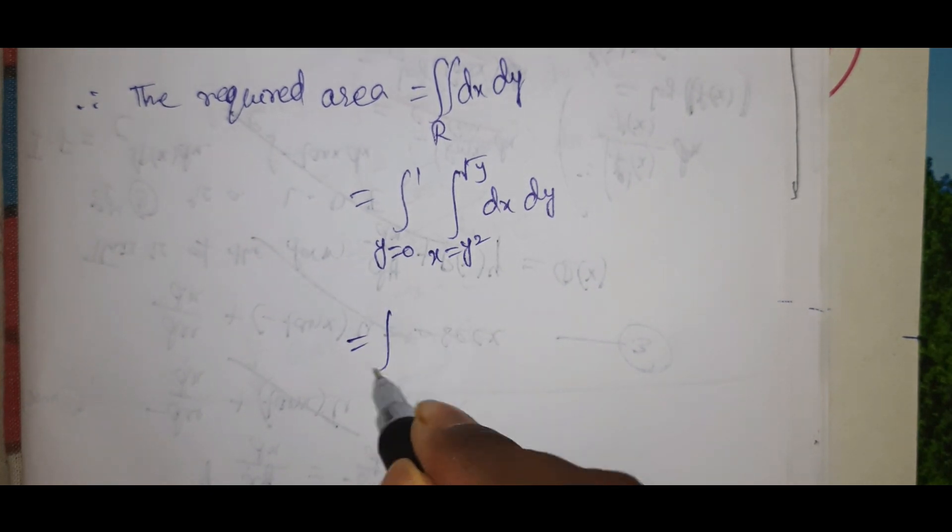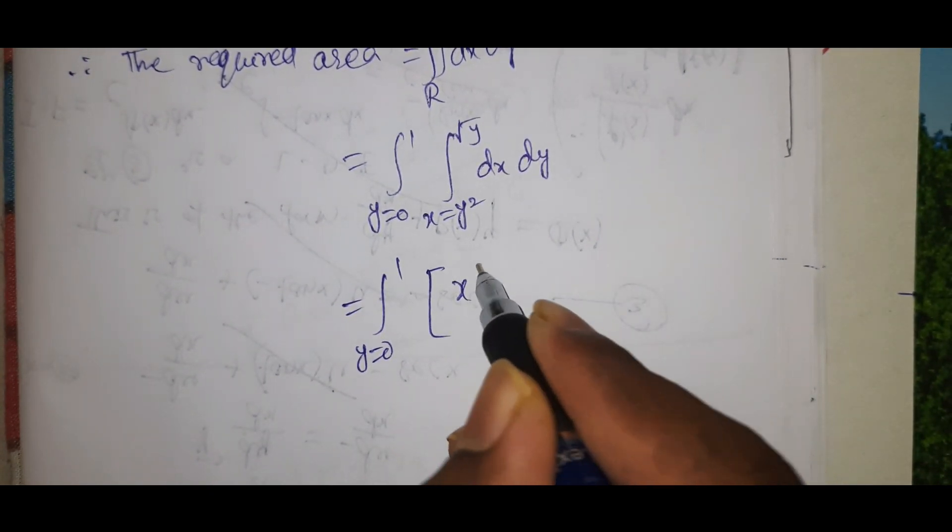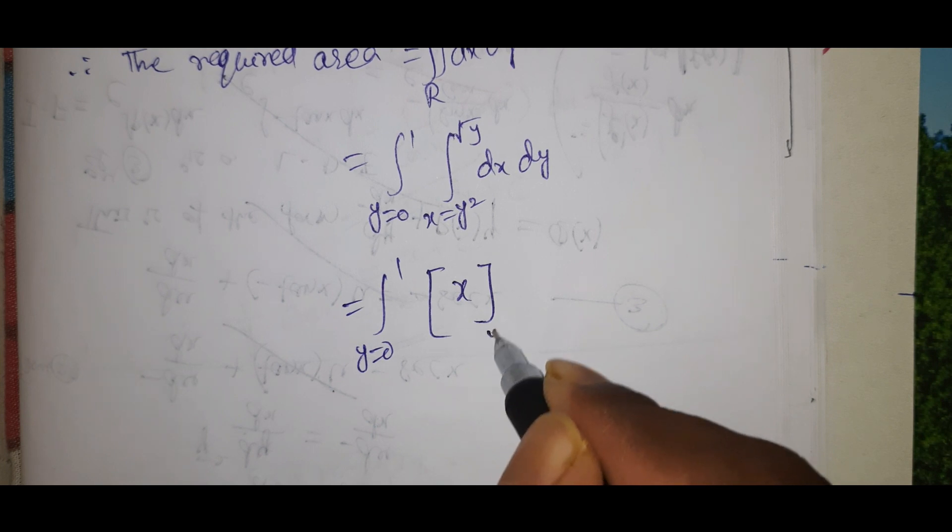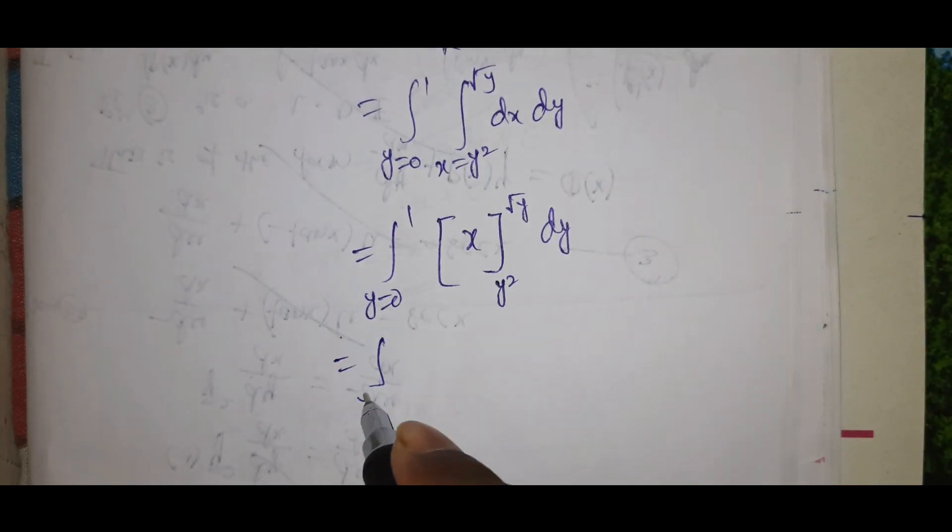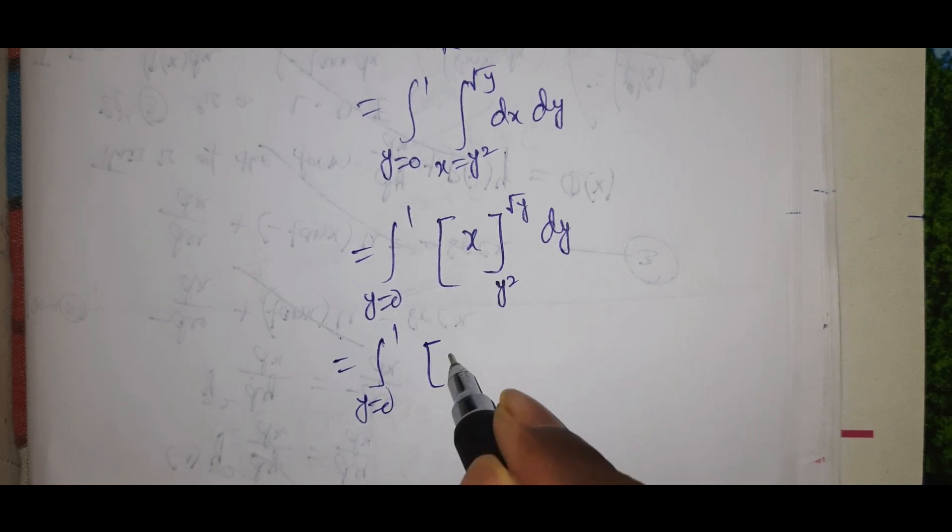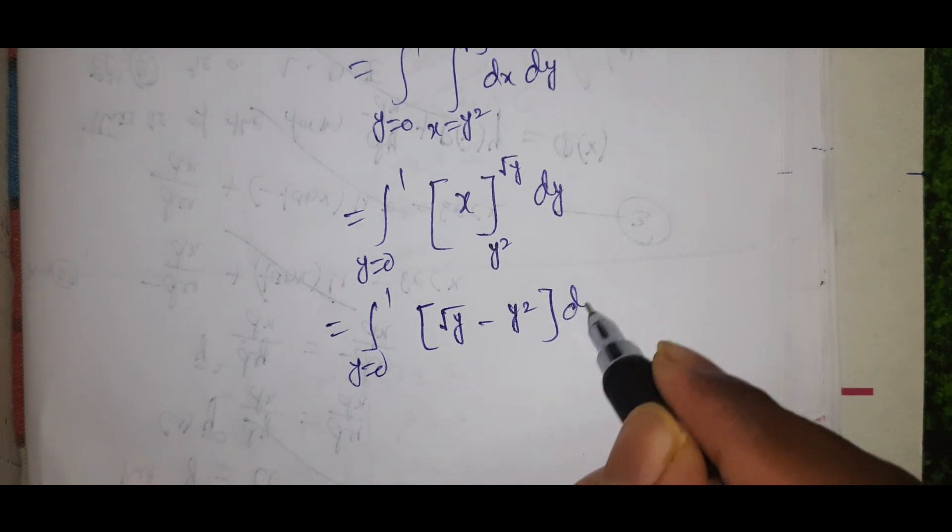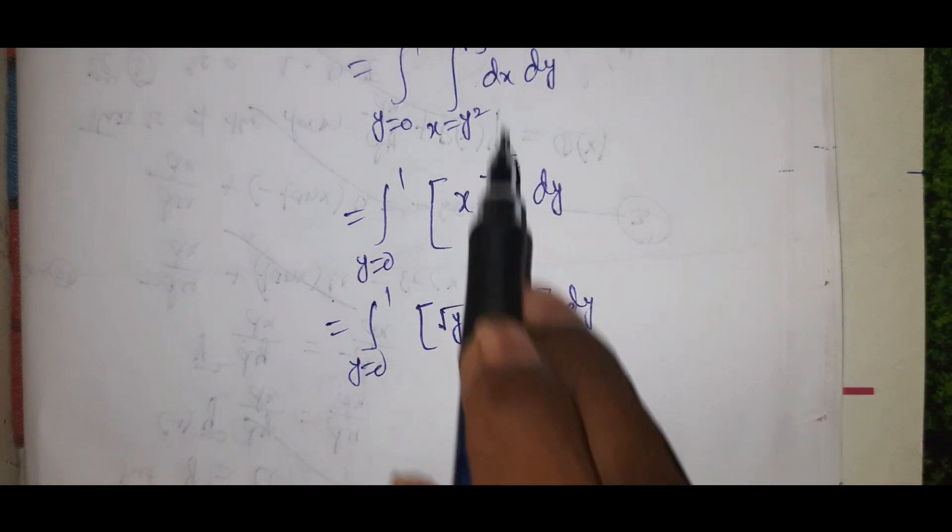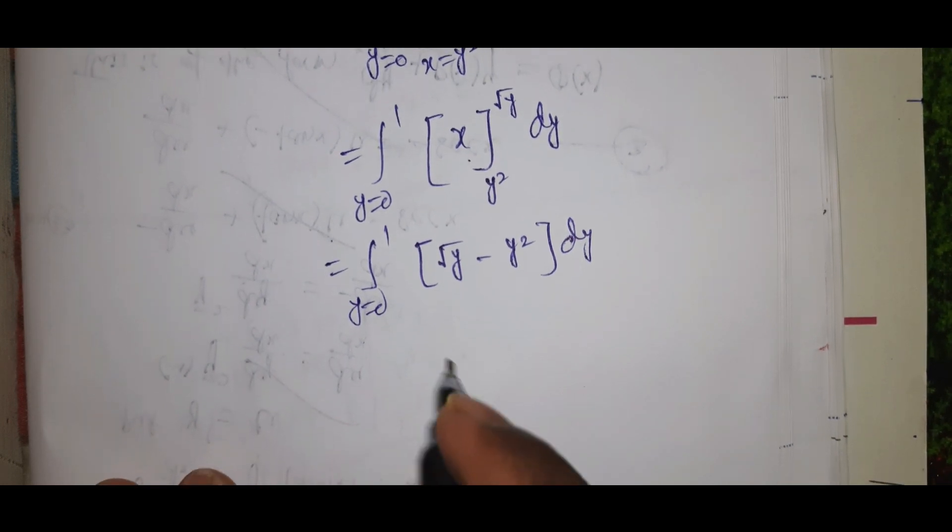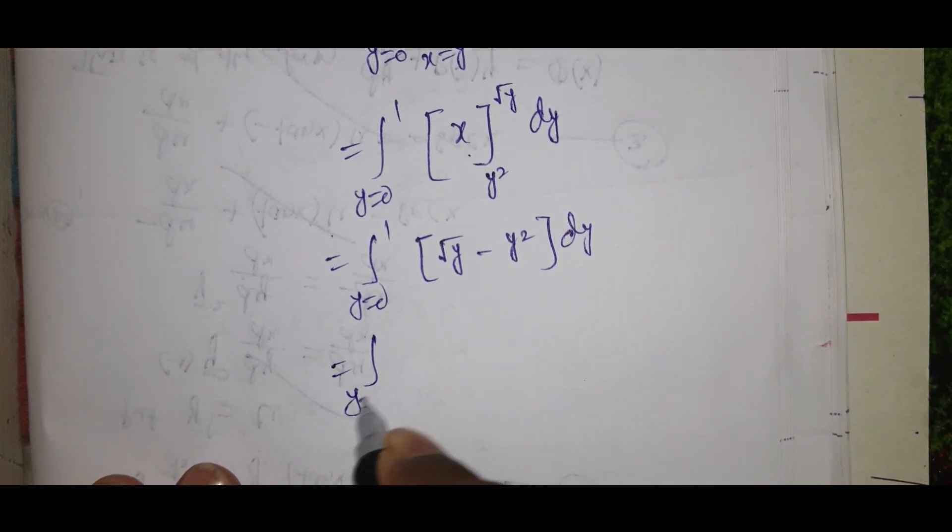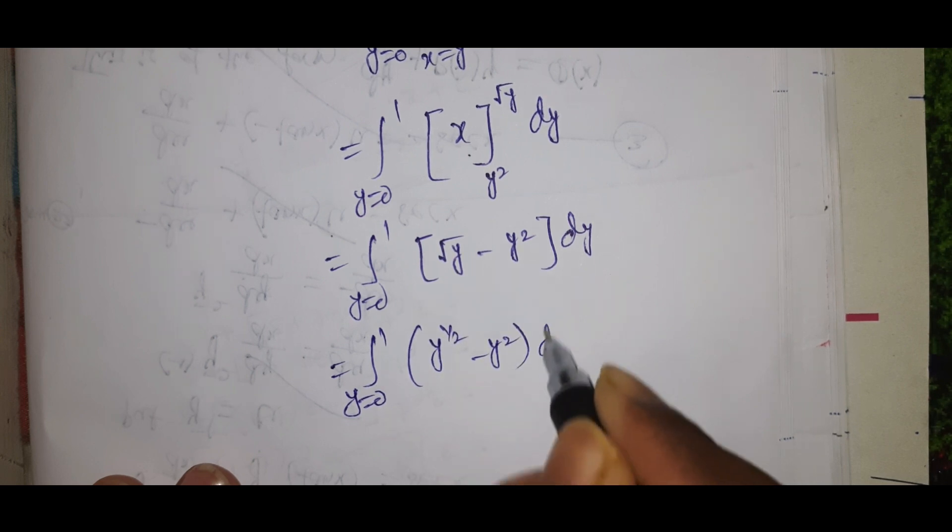This equals integral y = 0 to 1 of [x] evaluated from y² to √y dy, which equals integral from 0 to 1 of (√y - y²) dy. This is the upper limit minus lower limit.